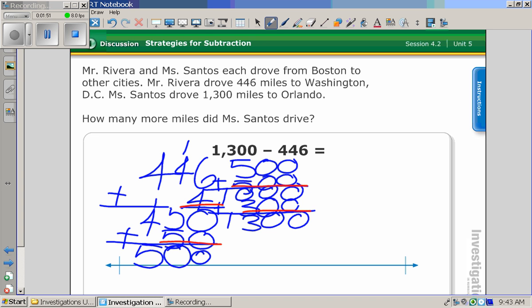So 300 and 500 is 800. And 50 is 850. And 4 is 854. And that's your answer.